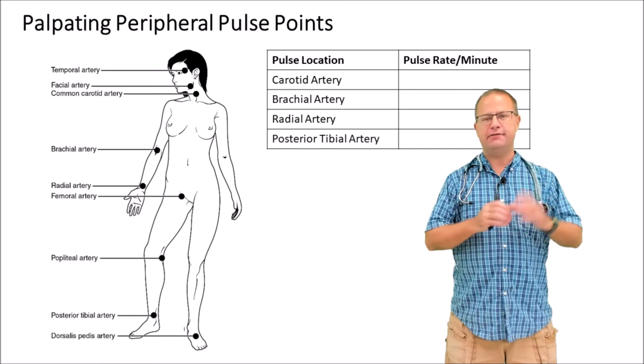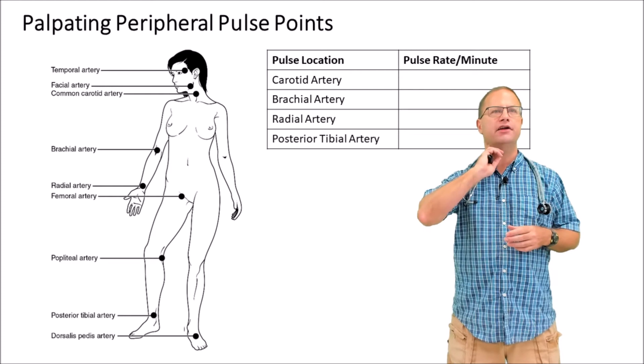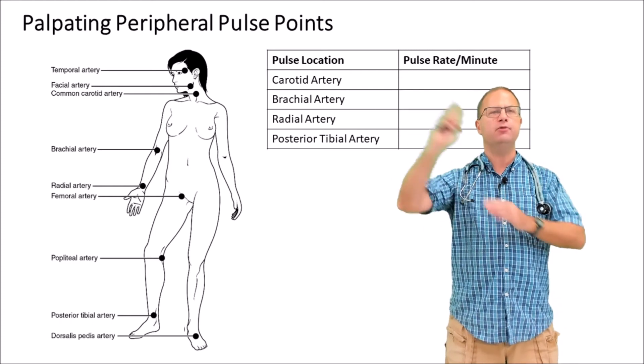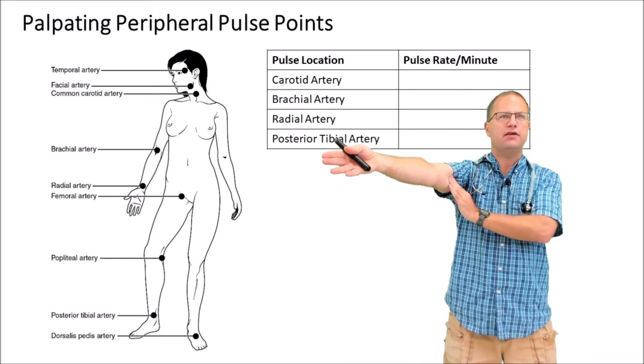The first activity we're going to do today is palpate the peripheral pulse at four different regions on the body. We're going to start with the carotid artery and then move to the brachial artery on the inside of the arm.